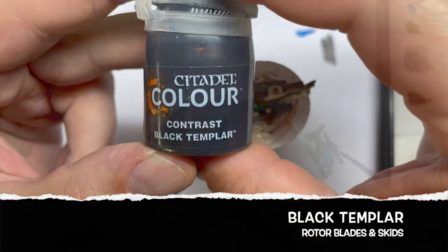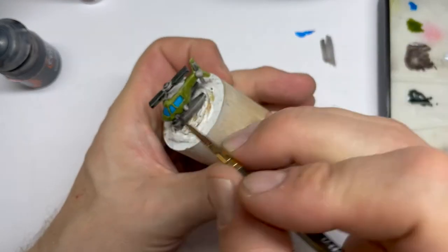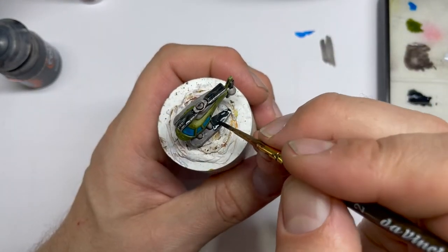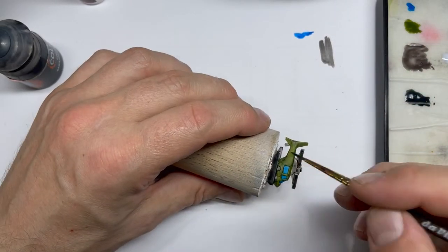After that I switched to Black Templar to give a little bit of better contrast. There I just used it on the rotor blades and the skids to make it pop a little bit more and to have a better contrast.